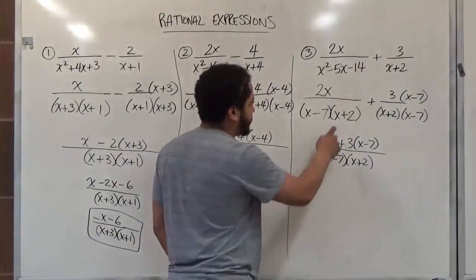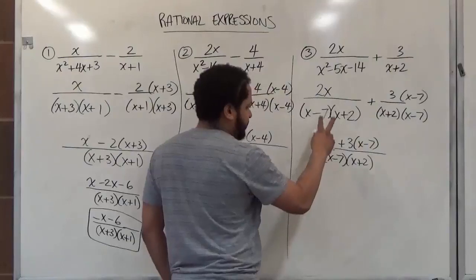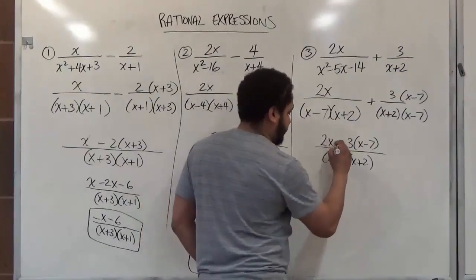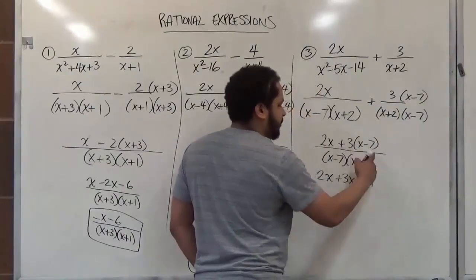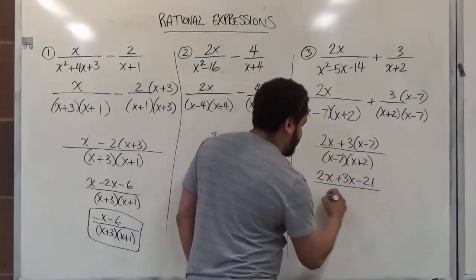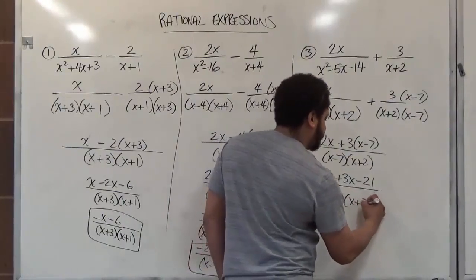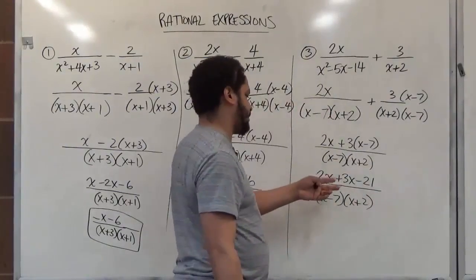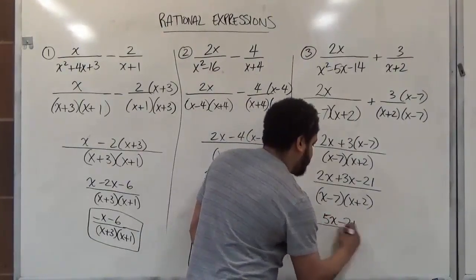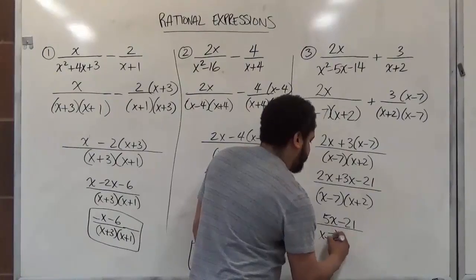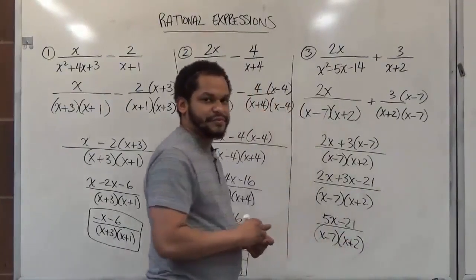So we have then two x's plus three x's minus twenty-one. Be careful with your distributions. And here we have x minus seven, x plus two. Now let's combine like terms and we're done with this one. So we have five x's minus twenty-one over x minus seven, x plus two. Let's move on to the next set.